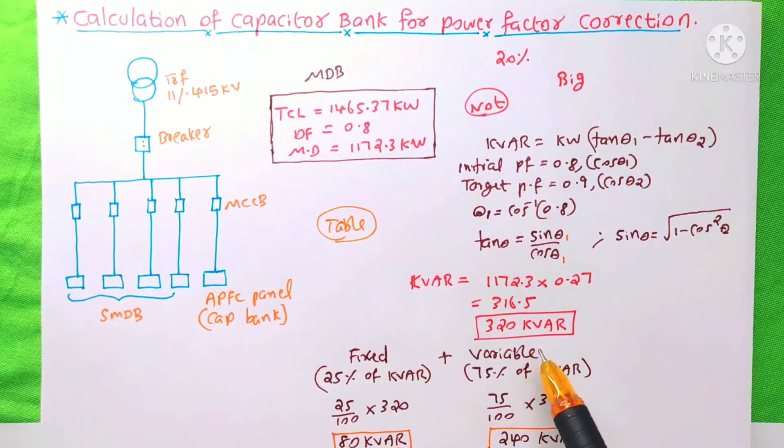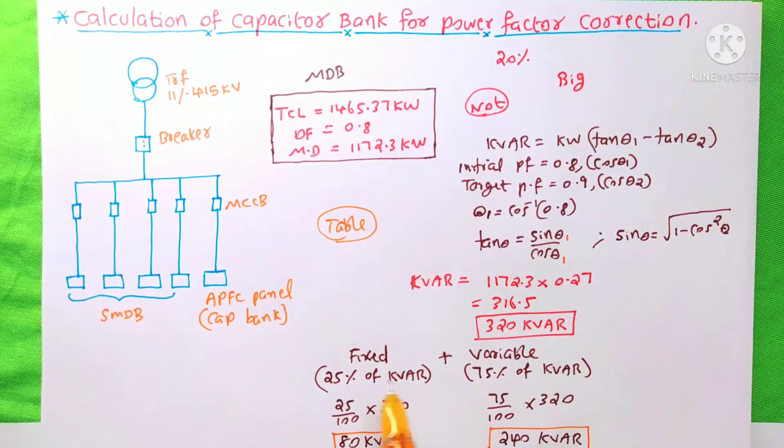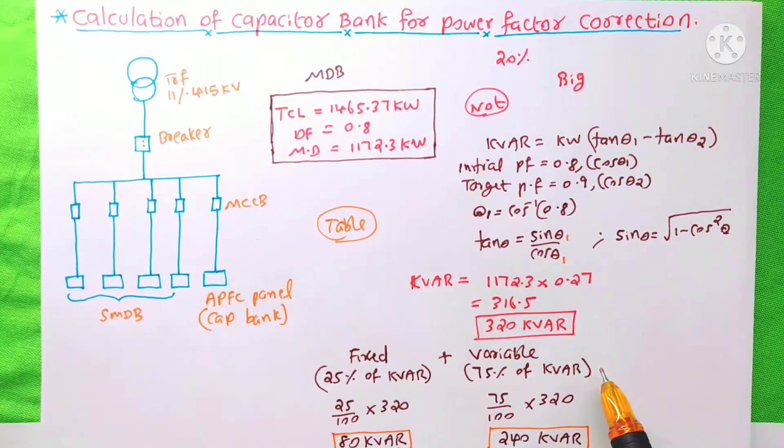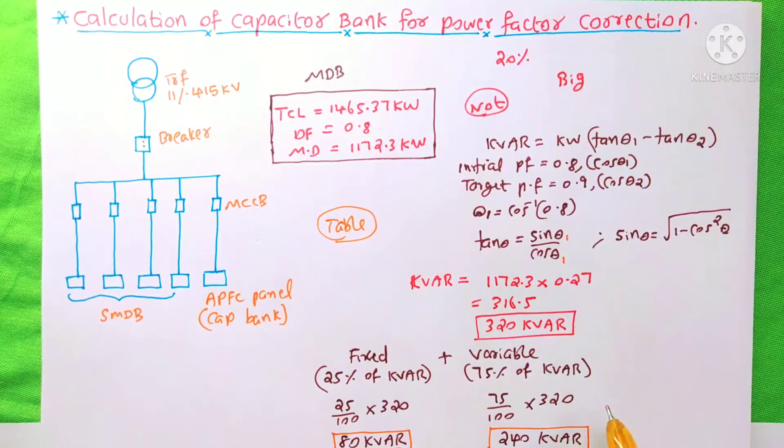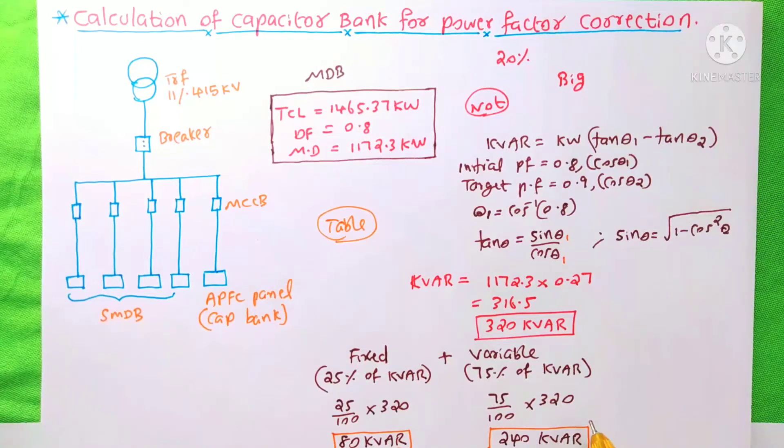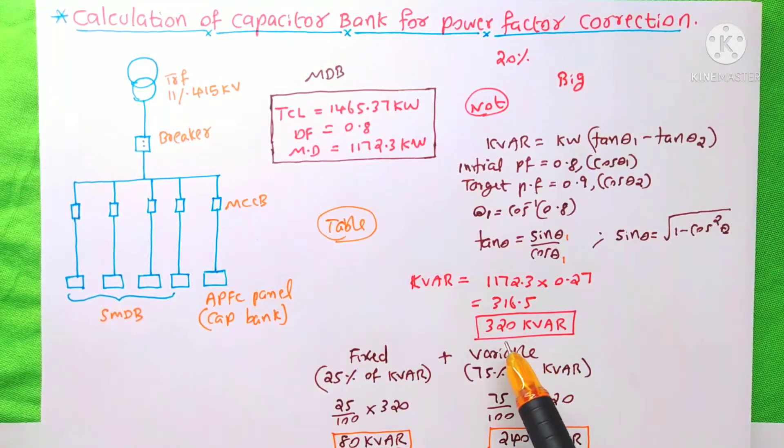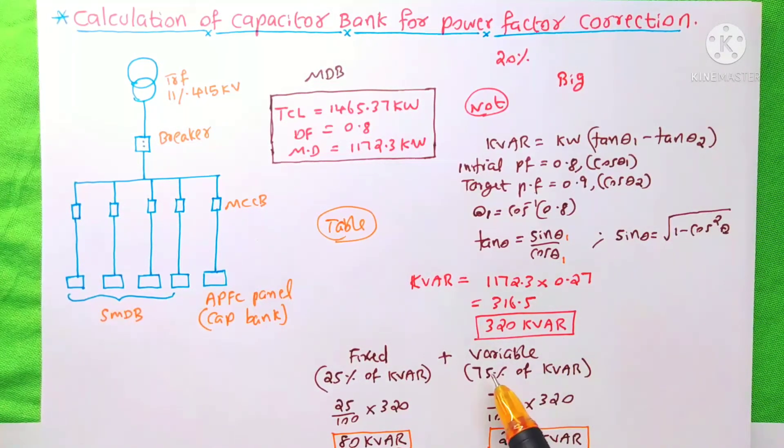After finding the total kVAR, you need to divide your kVAR into fixed capacitor plus variable capacitor bank. In most of the construction project, you can see only the variable capacitor bank. It means they connect always this 320 kVAR as variable capacitor bank.